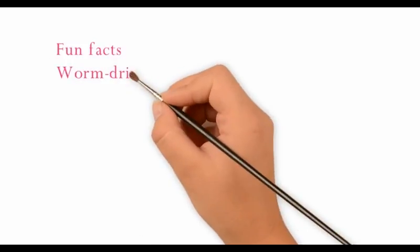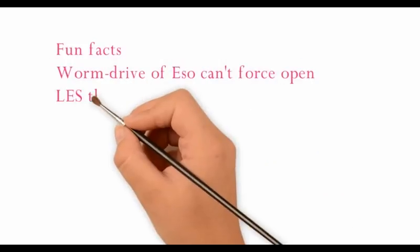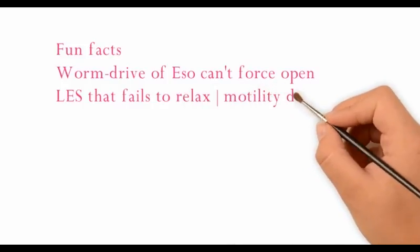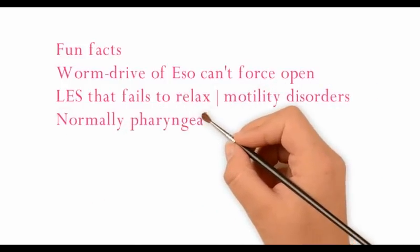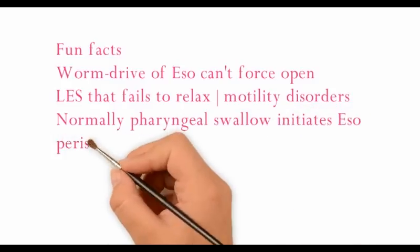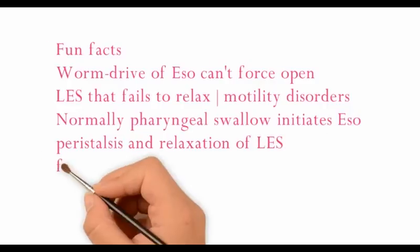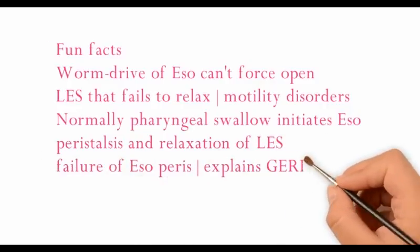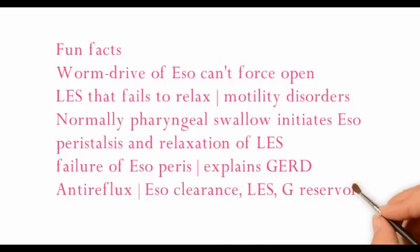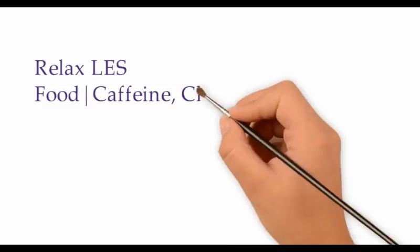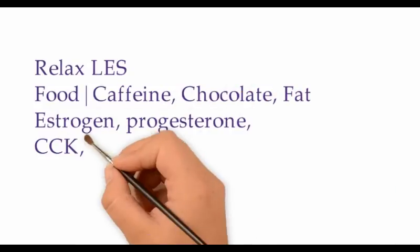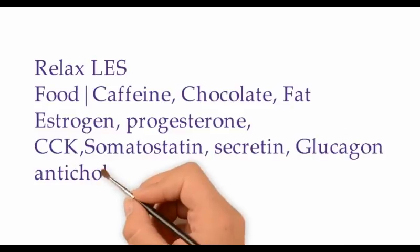The worm-drive of the esophagus cannot open a lower esophageal sphincter (LES) that fails to relax — this explains motility disorders. A normal pharyngeal swallow initiates esophageal peristalsis and relaxation of the LES. A failure of esophageal peristalsis during relaxation of the LES explains GERD. The natural antireflux mechanisms are esophageal clearance, LES relaxation, and good gastric reservoir function.